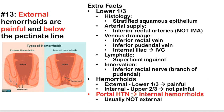Portal hypertension typically causes internal hemorrhoids. This is because the superior rectal vein drains blood from the upper two-thirds and eventually flows into the portal system — so when portal pressure backs up, it backs up through that route.